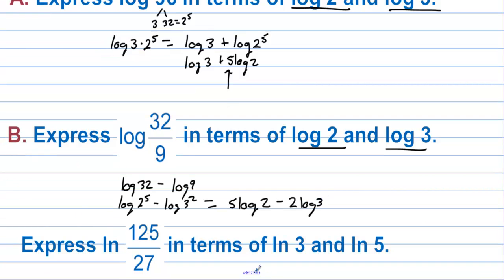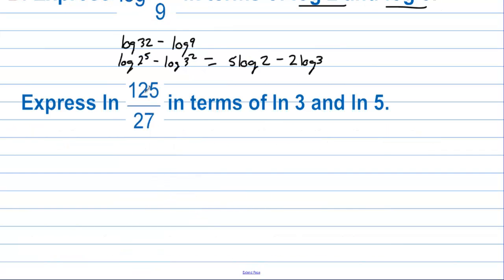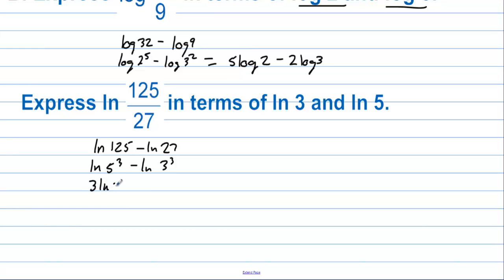Express natural log of (125/27) in terms of natural log of 3 and natural log of 5. This can be written as ln 125 minus ln 27, which is ln(5³) minus ln(3³). Bringing the powers down in front gives 3 ln 5 minus 3 ln 3.